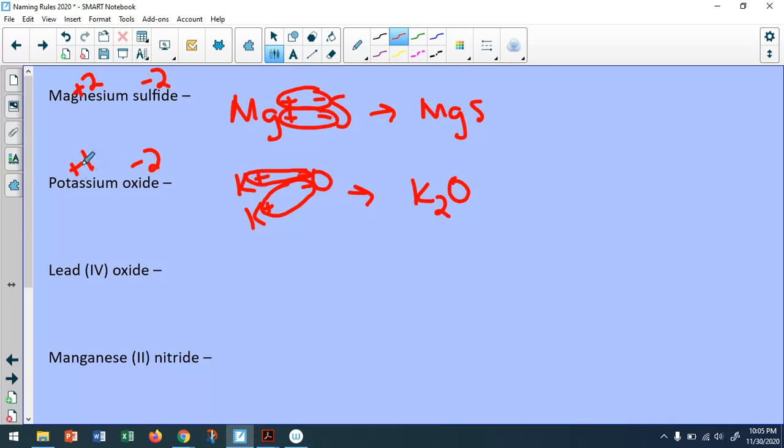Now the other way that we can do this is called the crisscross rule. And one thing we have to keep in mind is that we always have to give it in the reduced form whatever is the lowest ratio. So here we're being told by the Roman numerals that lead is a plus four and we know it's a negative two. I would need two negative twos to cancel out a plus four. So one thing I could think of the number of the charge becomes how many in a reduced form. So I would come up with Pb2O4 but this is not reduced. I can divide both of those by two. That would get me to PbO2.